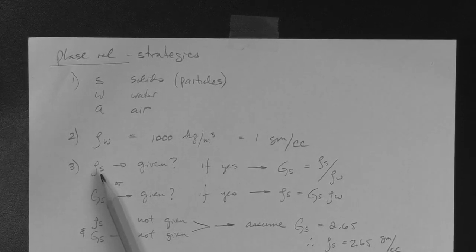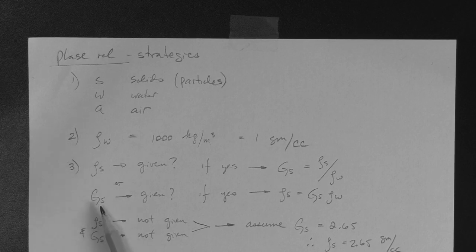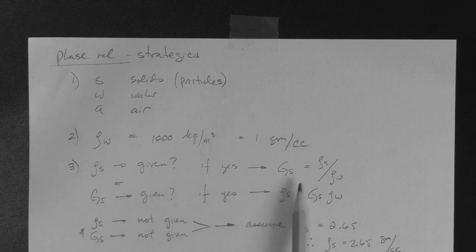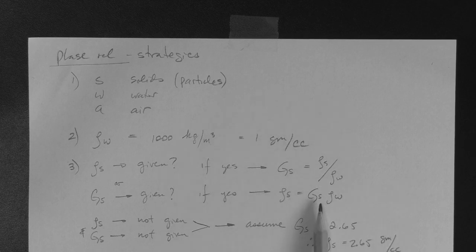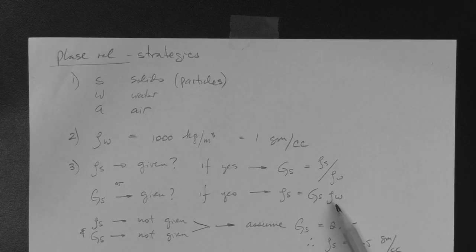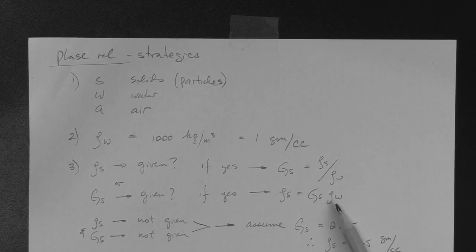Now, if you are not given the mass density of solids, but you are given or you know the specific gravity of solids, then it's the same thing. If you know this one, then you can use the same formula to get the mass density of solids, which would be the specific gravity of solids, which is given, times the mass density of water.